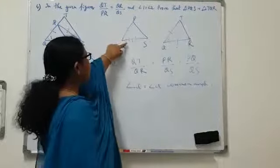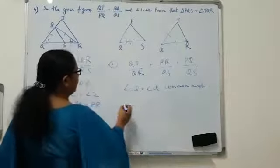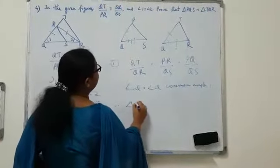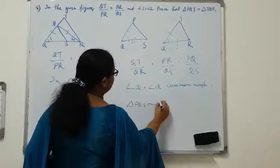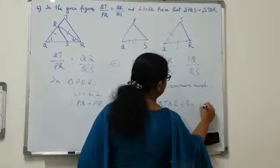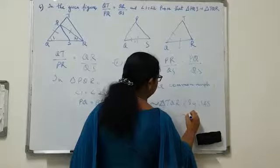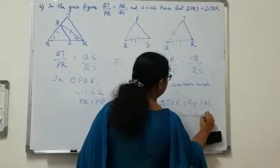So two sides and the included angle. Here are also two sides and the included angle. Therefore, triangle PQS is similar to triangle TQR by SAS similarity criterion.